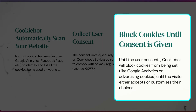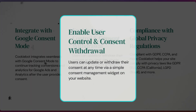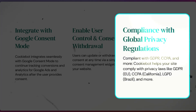Until the user provides consent, Cookiebot will block cookies from being set — like Google Analytics or advertising cookies — until the visitor either accepts or customizes their choice. Cookiebot integrates seamlessly with Google Consent Mode to continue tracking conversions and analytics for Google Ads and Analytics after users provide consent. And if the user wants, they can update or withdraw their consent at any time via a simple consent management widget on your website. It complies with GDPR, CCPA, and more.